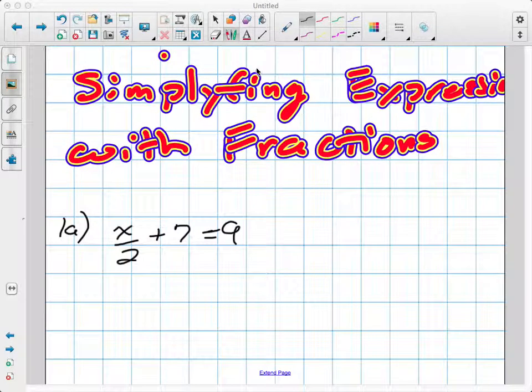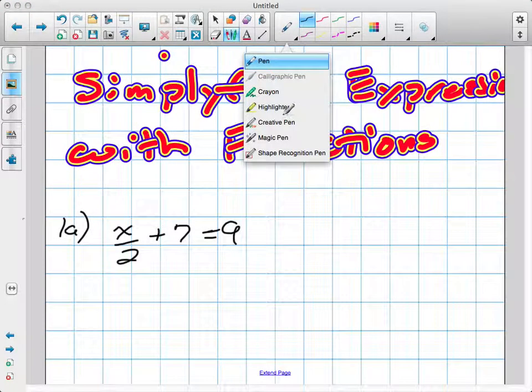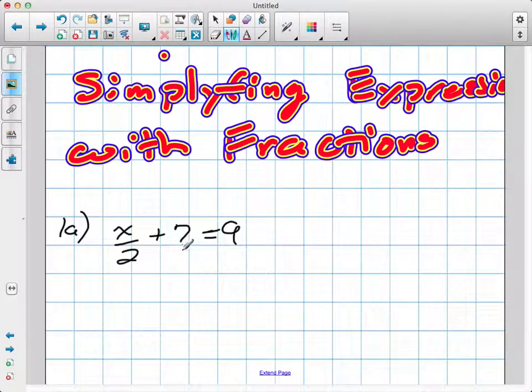The quickest way to solve this would be to move our positive 7 to the other side of the equation. Remember, when trying to isolate, we really only want the variable by itself.